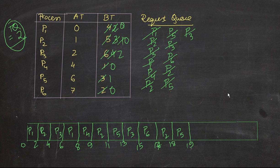Next we have P3, which has 2 units left — running from 19 to 21. It's not just about what's left that we're doing; we also consider the time quantum. We have to compute the process in such a way that it is less than or equal to the time quantum.